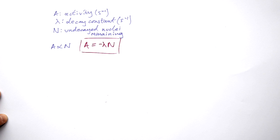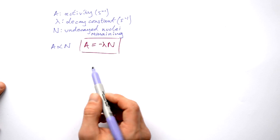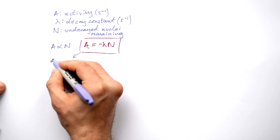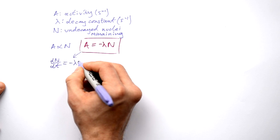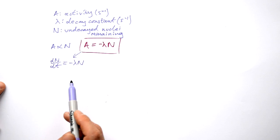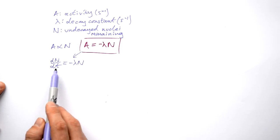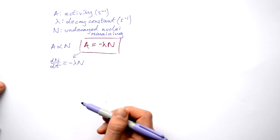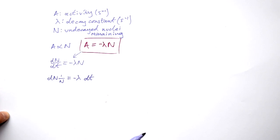That's our first important equation. Because activity is actually the change in the number of nuclei left per second, we can rewrite this as dN/dt. If you don't know about dN/dt because you're not doing maths at A-level, don't worry — this is basically describing the rate of change in N. To do anything useful with this, we need to rearrange to get N with the dN and dt on the other side, and then we need to do something called integration.